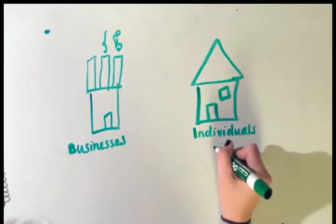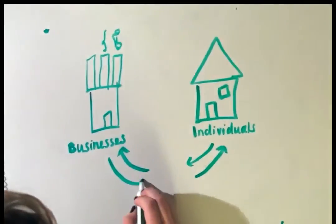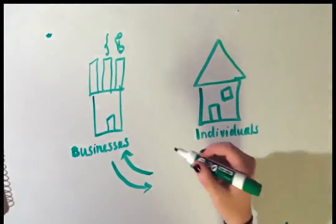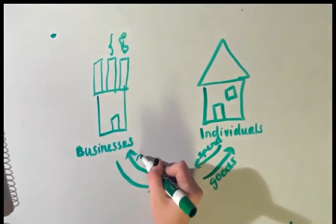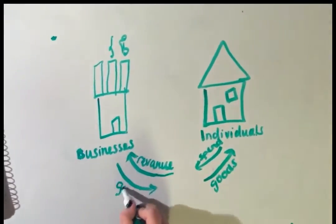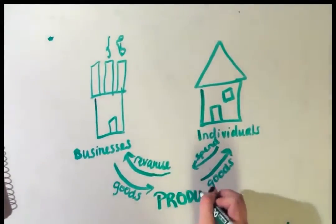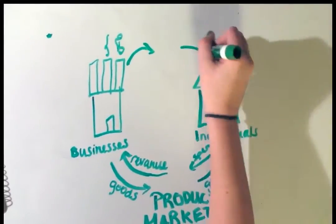In the Product Market, there are two sides, the individual and the business. The individuals demand goods and services while the businesses provide these needs. And in turn, the individual's spent money becomes the business's revenues.